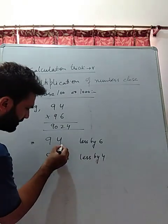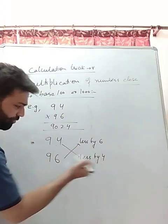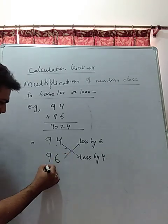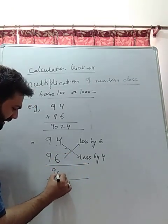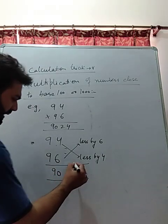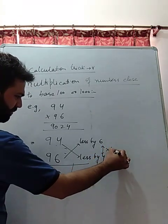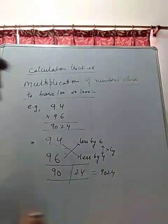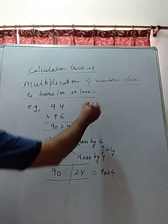Now what to do? Subtract them in the cross: 94 minus 4 equals 90, 96 minus 6 equals 90. Both ways you are getting the number 90. Then multiply these two numbers. What is 6 into 4? 24. So the answer is 9024.